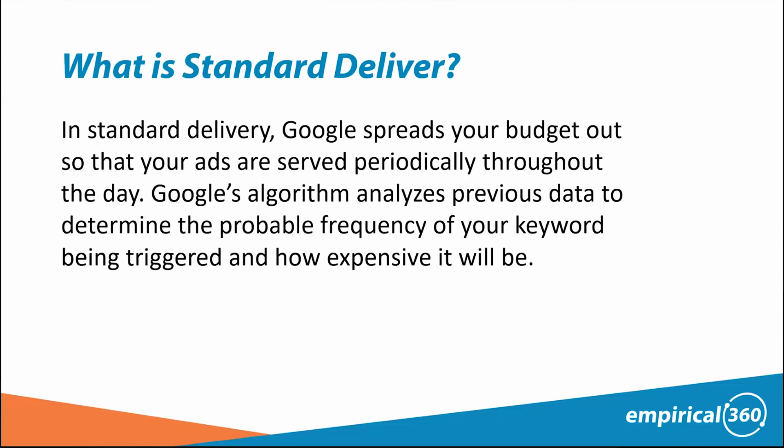Standard delivery is where Google spreads your budget throughout your ad schedule. So if you have $100 to spend within an eight hour period, Google will try its best to make sure the $100 spends throughout that period. Even if you could spend more at a certain time, Google will hold back your budget and make sure that it spreads throughout the day to the best of its abilities, and it will look at past data in order to do so.